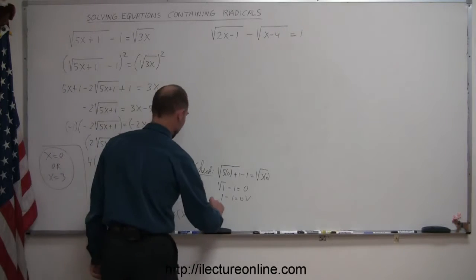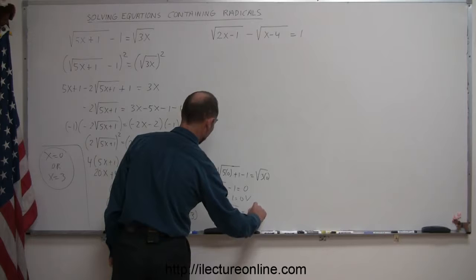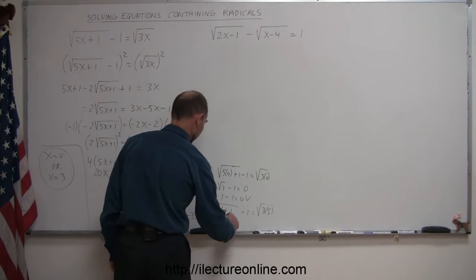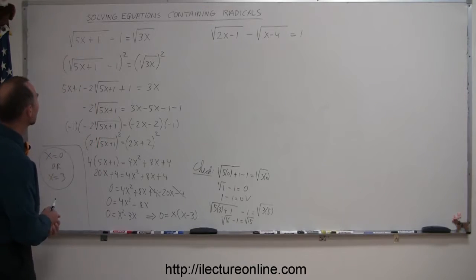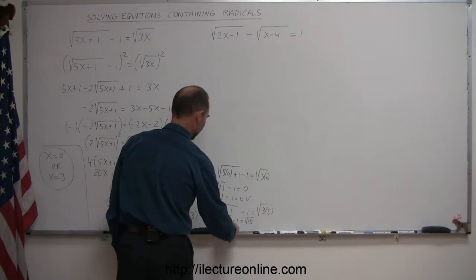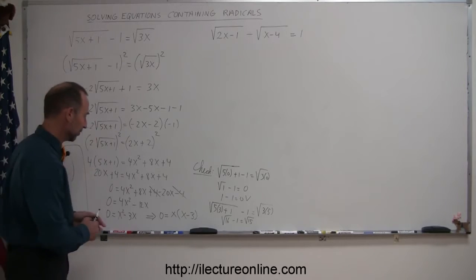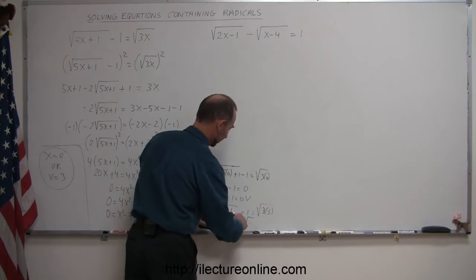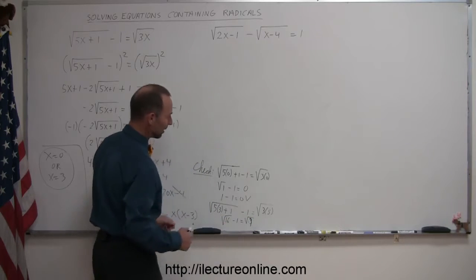Plugging in x equals 3: the square root of 5 times 3 plus 1, minus 1, equals the square root of 3 times 3. That's 15 plus 1 equals 16, so the square root of 16 minus 1 should equal the square root of 9. The square root of 16 is 4, and 4 minus 1 is 3, and the square root of 9 is 3. So that checks out as well — I had made a small mistake earlier but x equals 3 is also a valid solution.